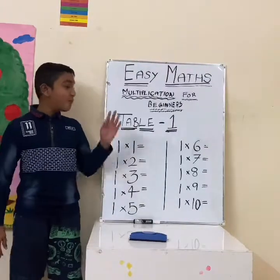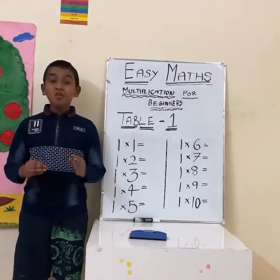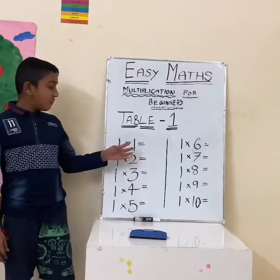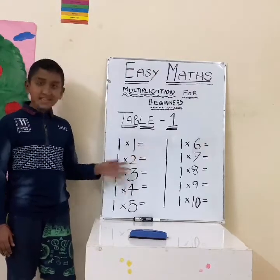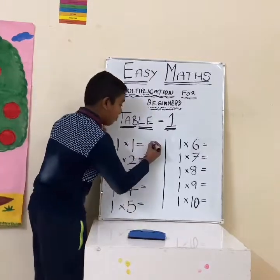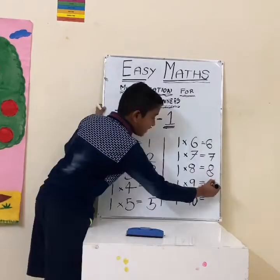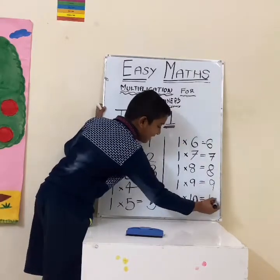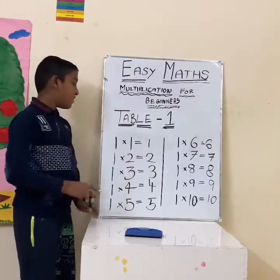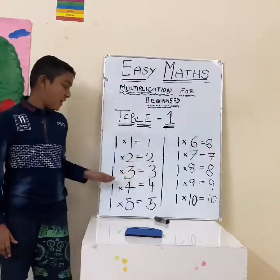Let's start with 1 table. If you want to count forward numbers, you can write the 1 table. Forward numbers are the answer for this table. We write 1, 2, 3... up to 9 and 10. So: 1 one is 1, 1 two is 2, 1 three is 3, and so on.